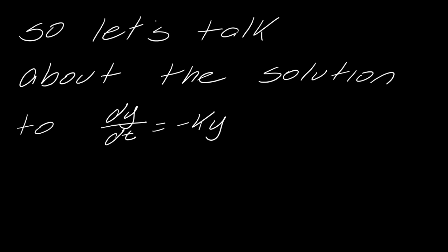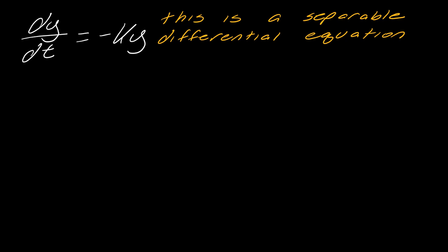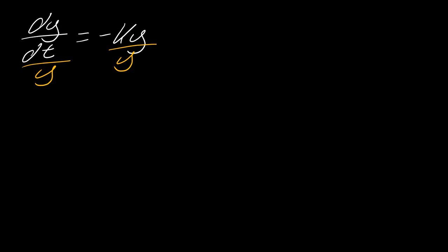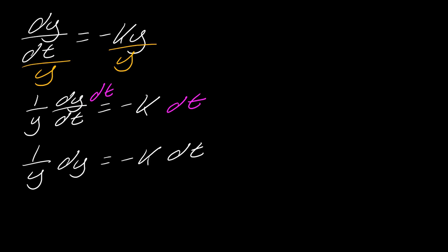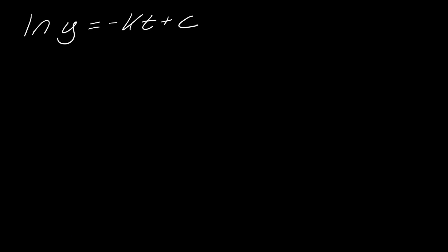So the first thing I want to do now is talk about what is the solution to this differential equation. I just want you to notice this is actually a separable differential equation. So what I'm going to do is get the dy and the y together. First things first, we divide by y. So now I've got 1 over y dy/dt. And then I want to bring this dt over to the other side. So once you separate everything with separable differential equations, then you can integrate.